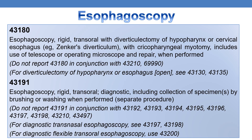The first CPT is 43180: esophagoscopy, rigid, transoral, with diverticulectomy of hypopharynx or cervical esophagus, with cricopharyngeal myotomy — includes use of telescope or operating microscope and repair when performed. Do not report 43180 in conjunction with 43210 and 69990. For diverticulectomy of hypopharynx or esophagus open, refer to CPTs 43130 and 43135.